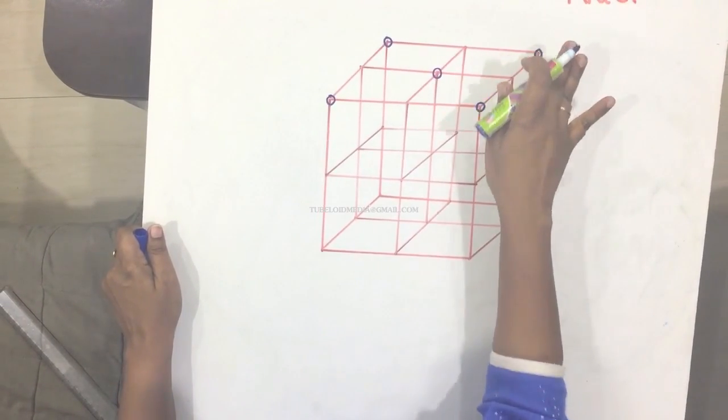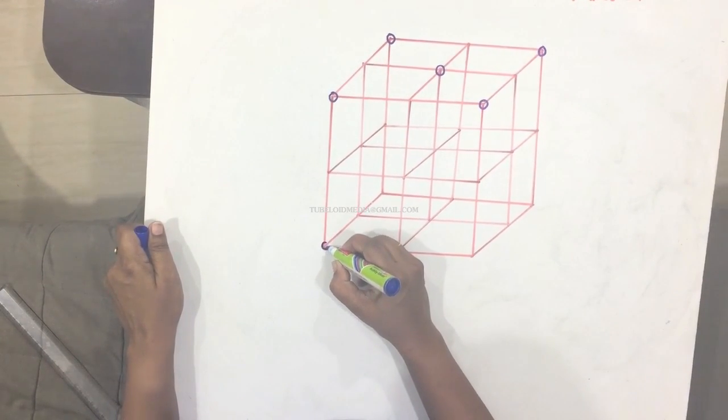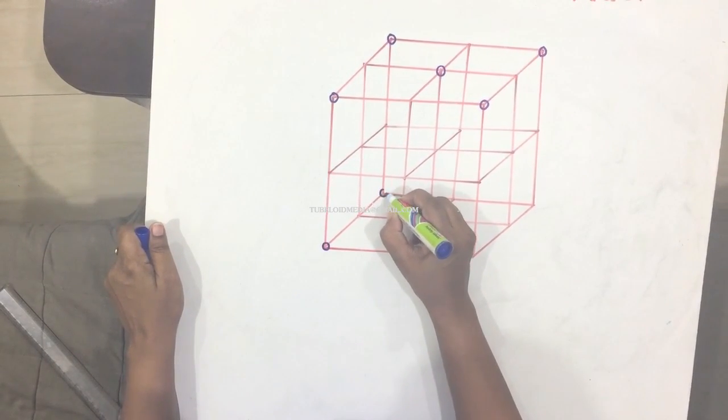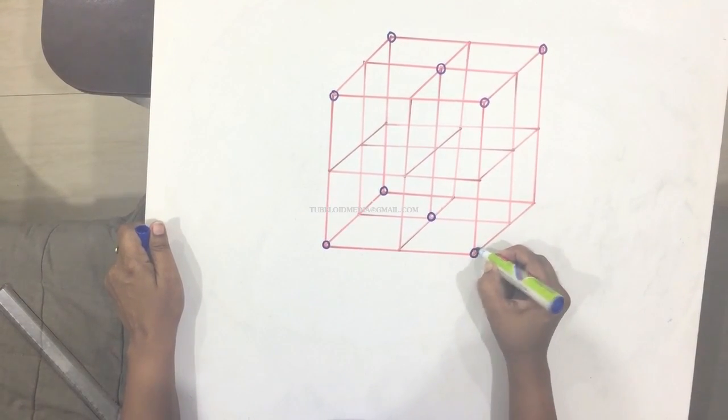So top layer we have five. And similarly bottom you have five. So six, seven, eight, nine, and ten.